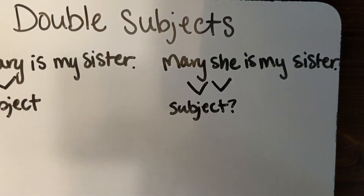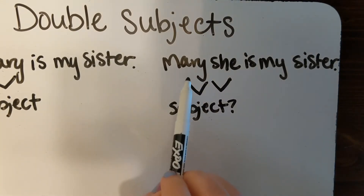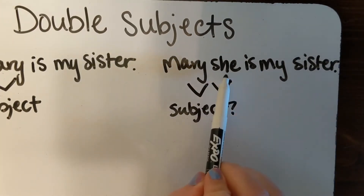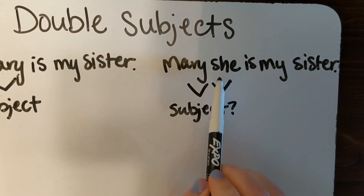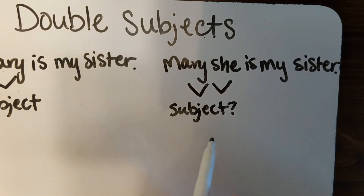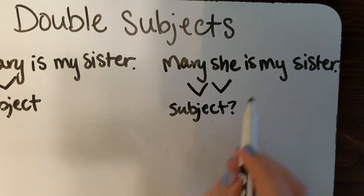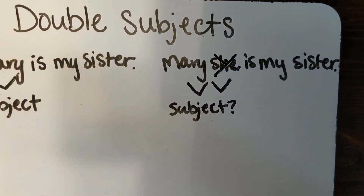For example, if we have the sentence 'Mary, she is my sister,' that would be incorrect because we have a double subject — both a noun and a pronoun. We need to decide which one to use. Let's just use Mary, so: 'Mary is my sister.'